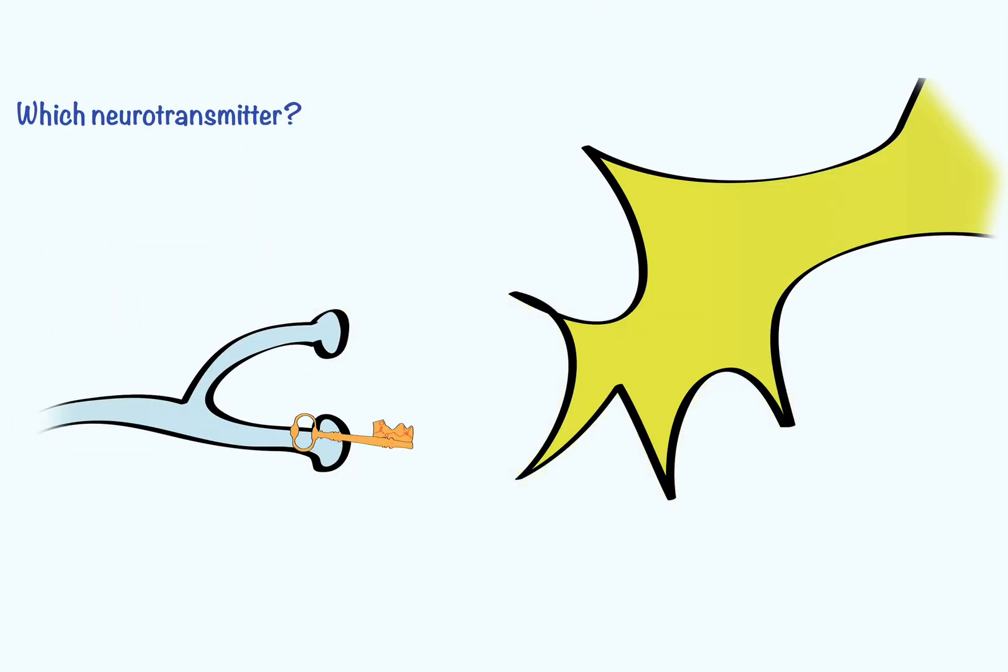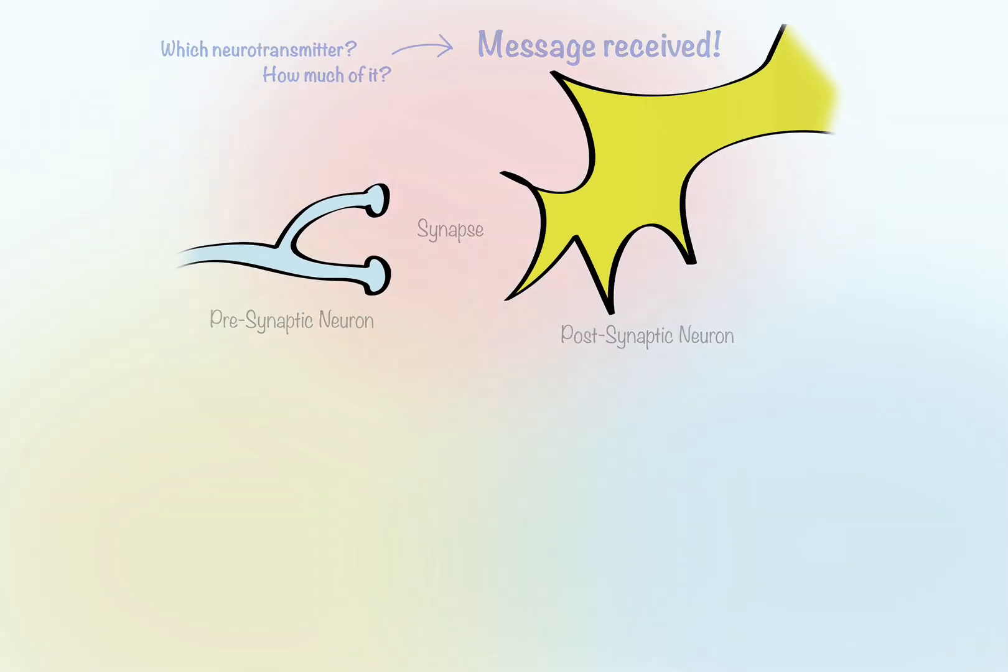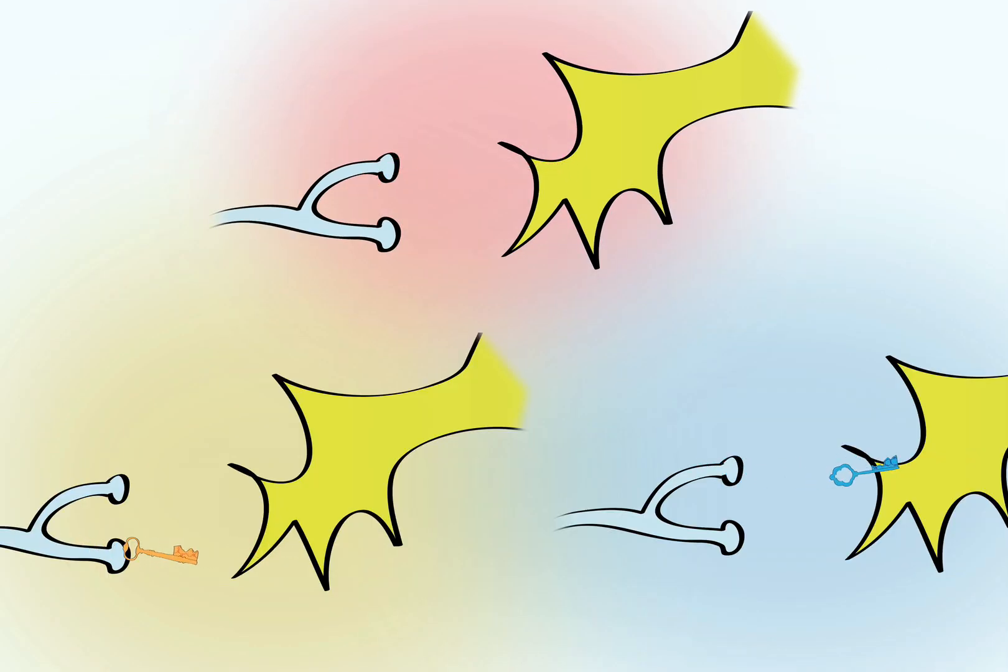Which neurotransmitter and how much neurotransmitter is released into the gap tells the next cell, the postsynaptic neuron, the strength and the nature of the information. The trick is, presynaptic cells in different brain regions release different neurotransmitters, and receptor proteins on the postsynaptic cells only catch, or bind, a few types of these molecules.